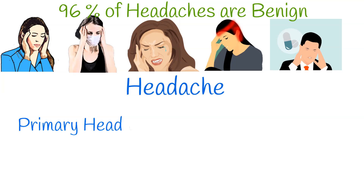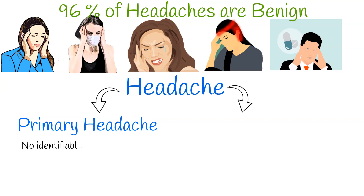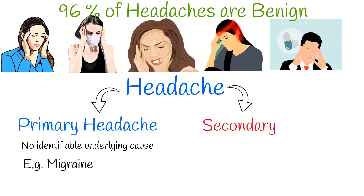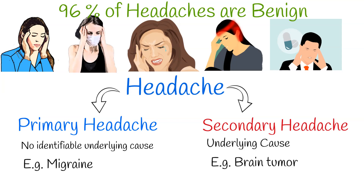Generally, headache can be categorized into two broad categories. Primary headaches are those with no identifiable underlying cause — for example, migraine headache is a primary headache because there is no specific underlying reason which causes it. Secondary headache means there is a specific disease or event which causes the headache — for example, a brain tumor can compress brain structures and cause headache; that is a secondary headache.